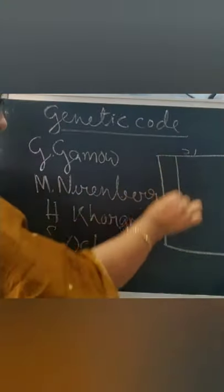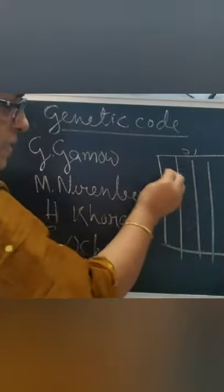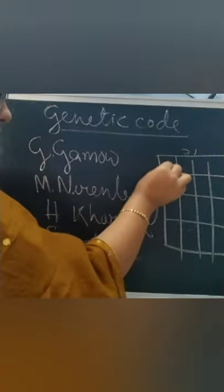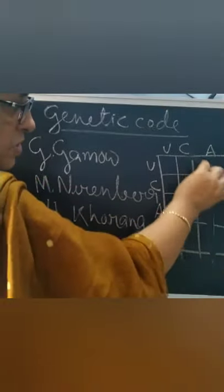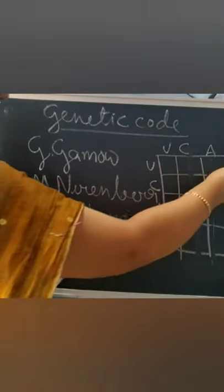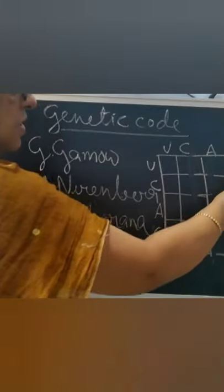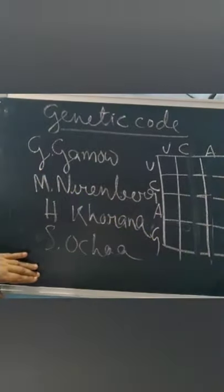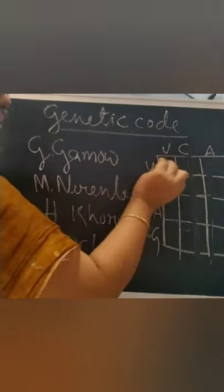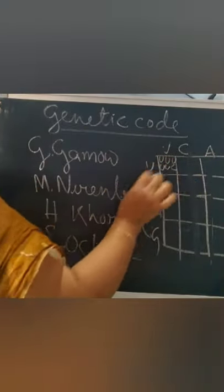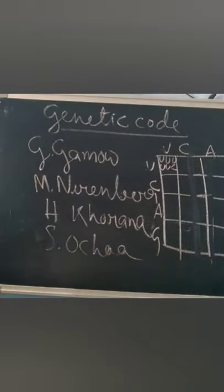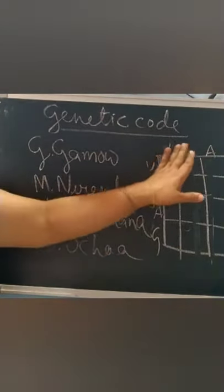This genetic code diagram is given in NCERT. There are 4 blocks with the bases U, C, A, G on the first position. Each block is again subdivided into U, C, A, G for the second position, and within each of those there are again U, C, A, G for the third position — giving first, second, and third position nitrogenous bases.